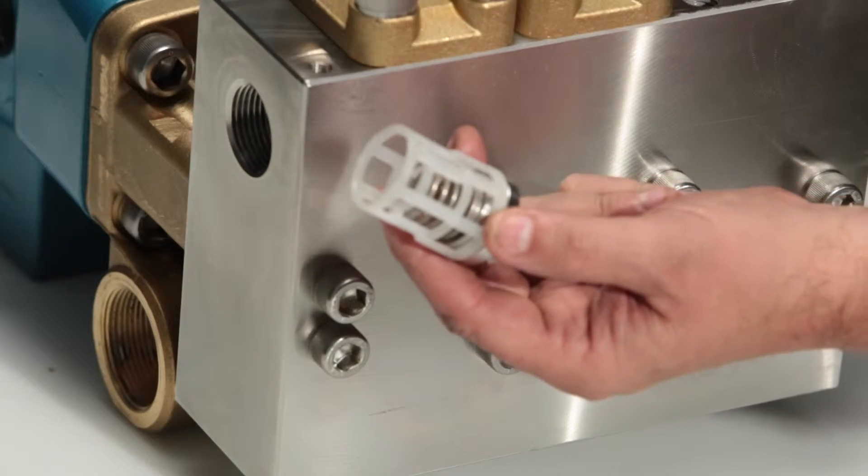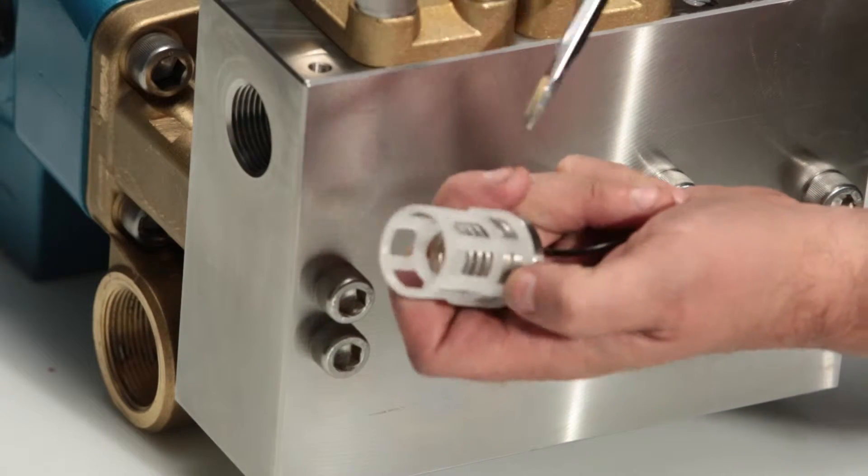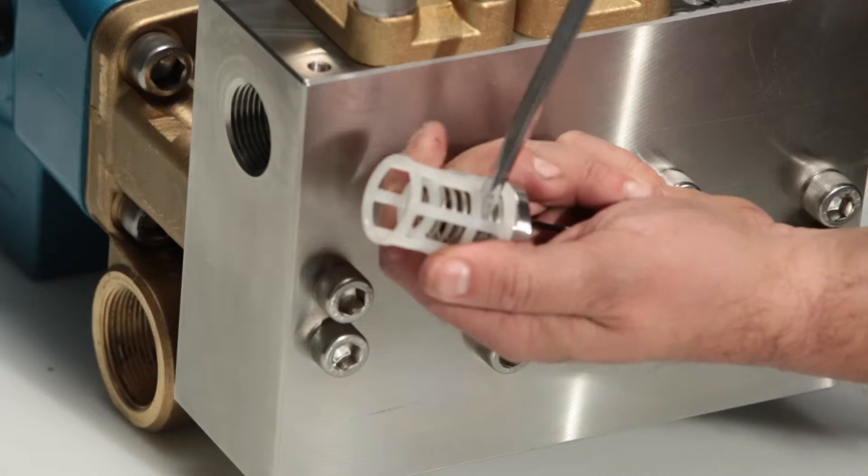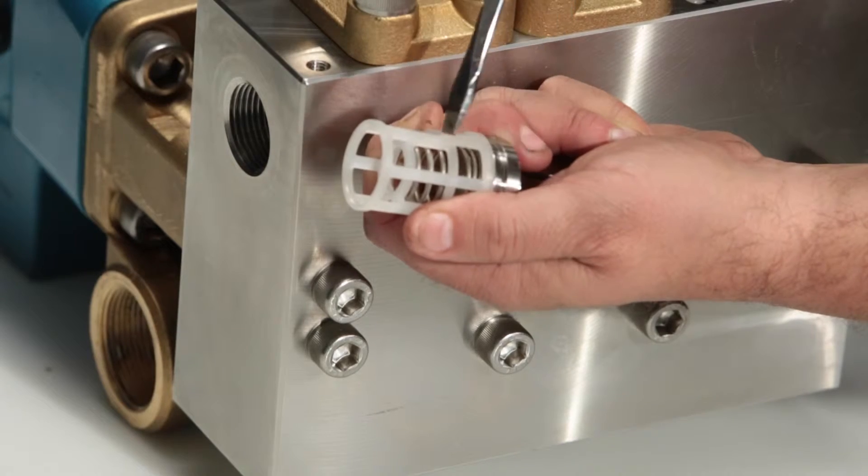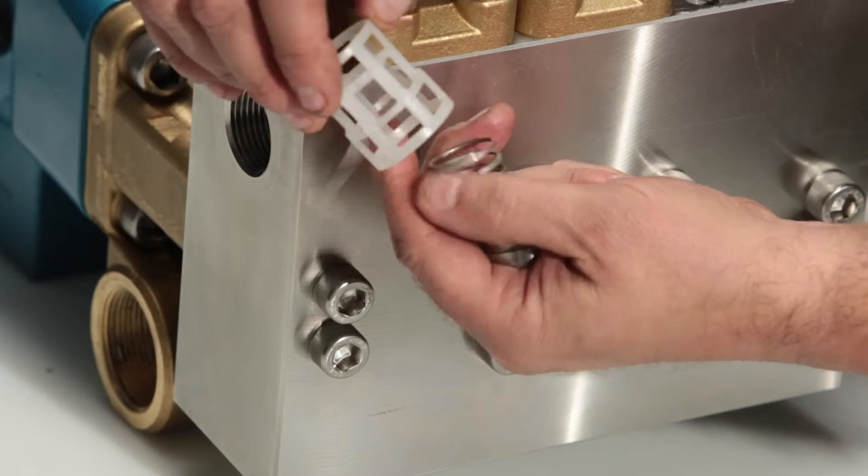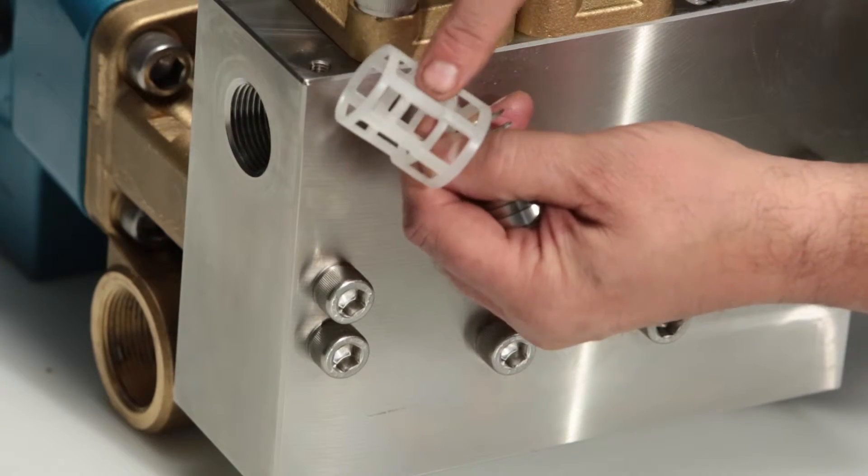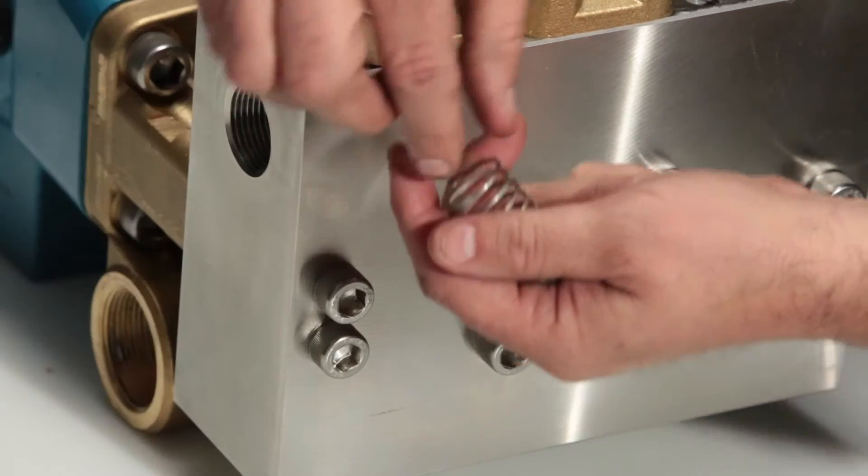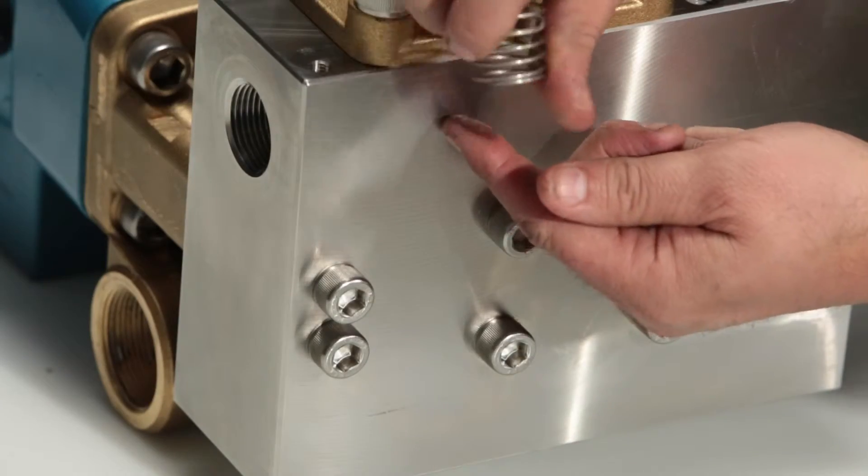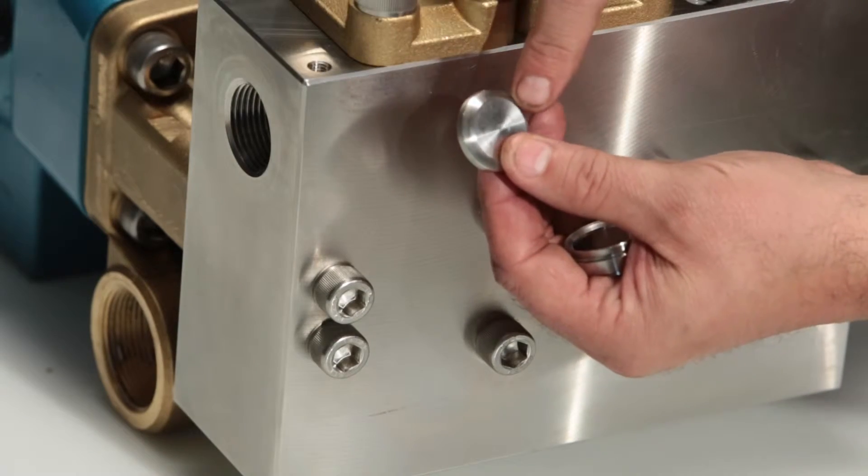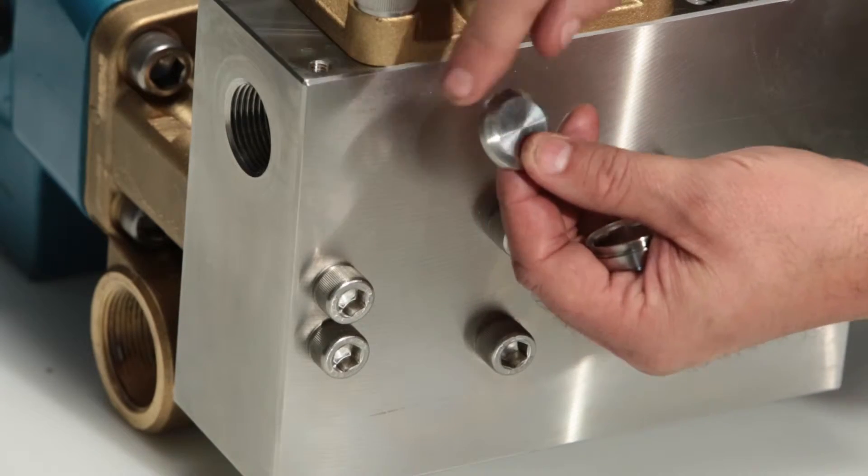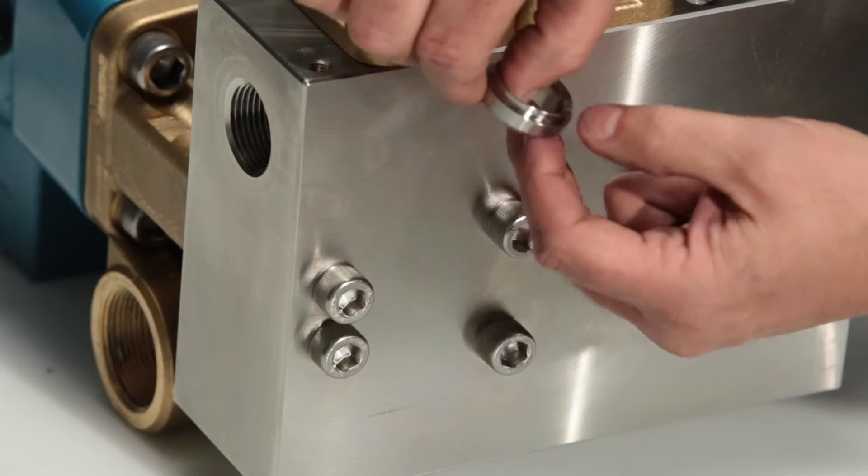To open the inlet valve assembly, place a flathead screwdriver between the valve retainer and top of the valve and twist to create separation from the seat. Check the retainer for wear, the spring for proper tension, the valve for pitting or wear, and the valve seat for pitting or wear.